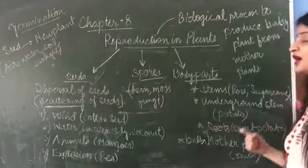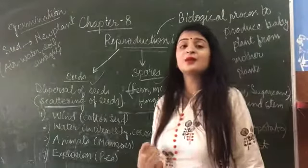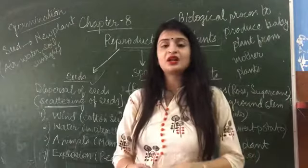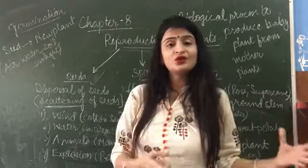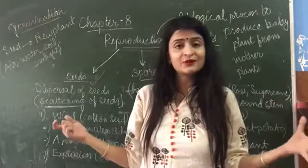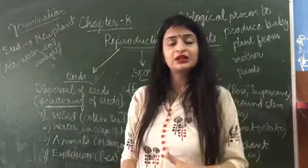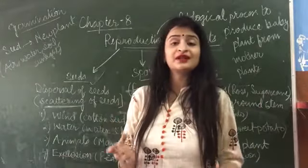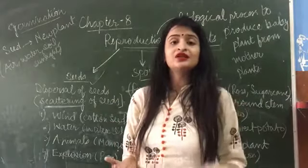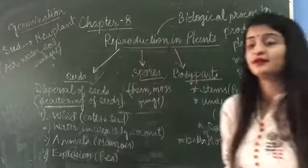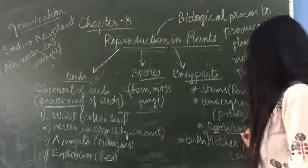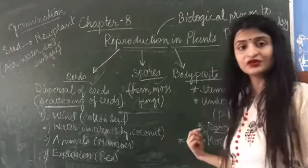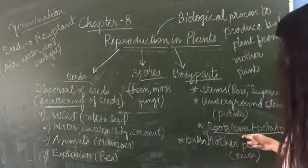The next one is underground stem. Under underground stem, we have potato. A potato's seed is planted once in the soil, and then a whole other set of potatoes start to grow underground. When they are fully developed, they emerge from the soil. The next one is roots — that is sweet potato. Sweet potato is a root plant that grows from roots.